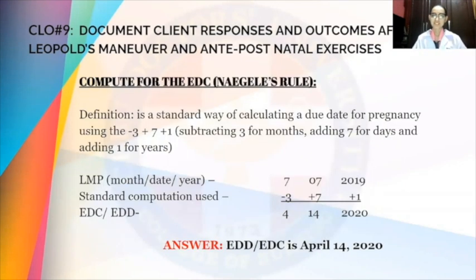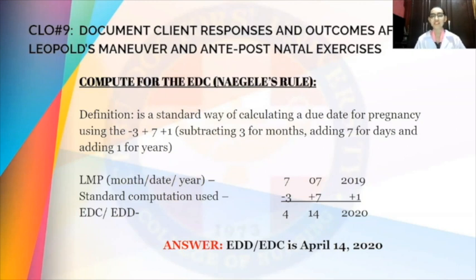Next, we have computations. So when we compute for the EDC or the EDD, we use Naegel's rule. This is a standard way of calculating a due date for a pregnancy using the standard computation of minus 3, plus 7, plus 1. When computing for the EDC using Naegel's rule, we need the LMP — the last menstrual period — and we also need to apply the standard computation.